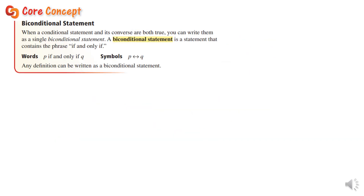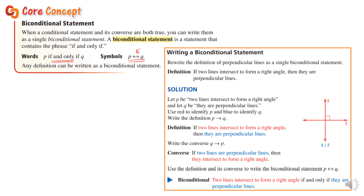A biconditional statement is a special conditional statement. When a conditional statement and its converse are both true, you can write them as a biconditional statement. You write it with the words "if and only if" and the symbol arrows go both ways.